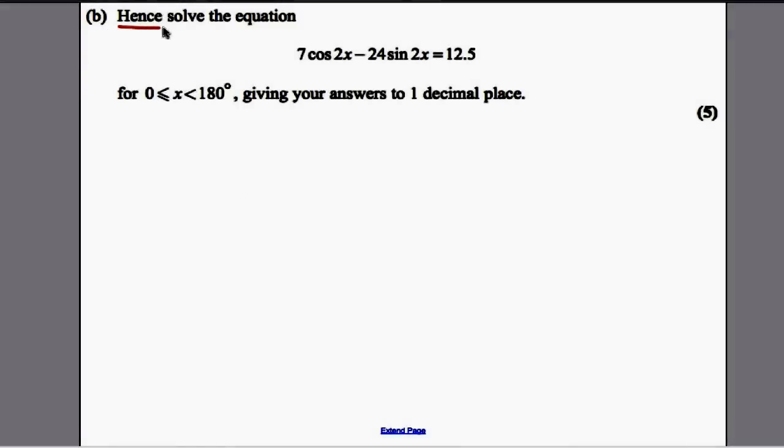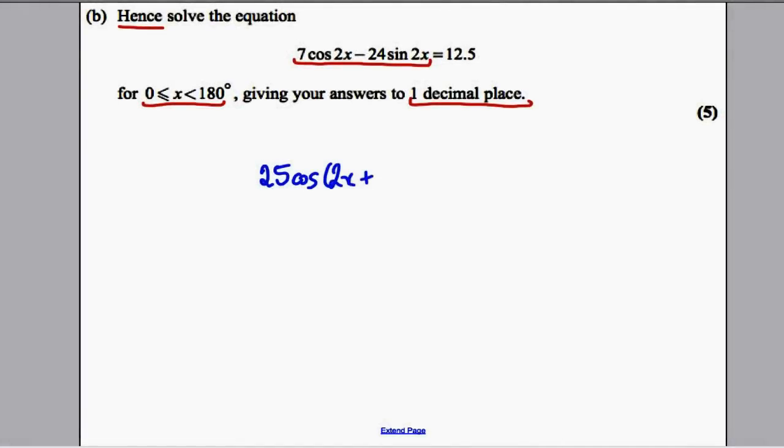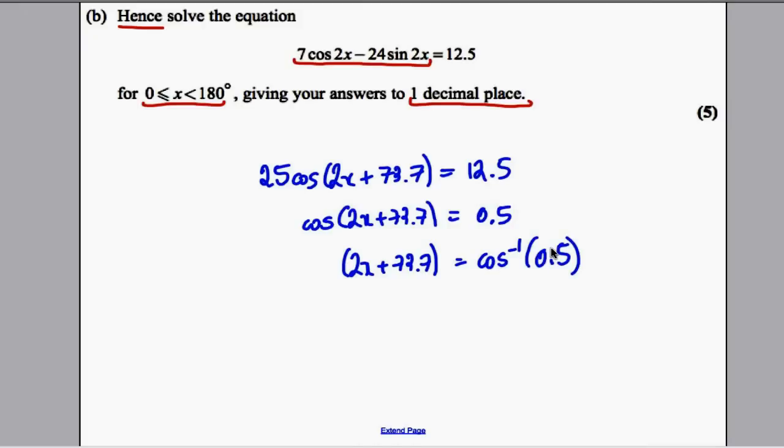Part B: Hence, solve the equation 7cos2x - 24sin2x = 12.5 for 0 ≤ x < 180°, giving your answer to 1 decimal place. From part A, this equals 25cos(2x + 73.7) = 12.5. Divide both sides by 25: cos(2x + 73.7) = 0.5. Therefore, 2x + 73.7 = cos⁻¹(0.5). The inverse cos of a half is 60, so the principal value is 60.